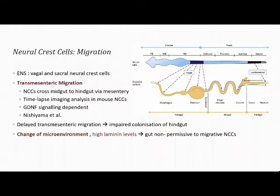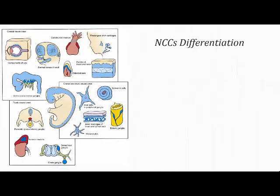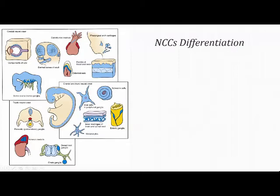Another theory involves changes in the microenvironment, where high laminin levels may make the gut non-permissive to migrating neural crest cells. Neural crest cells — cranial, vagal, or sacral — differentiate into a variety of tissues including components of the eye, cranial connective tissues, dermal bones of the skull, conotruncal structures, pharyngeal arch cartilages, odontoblasts, dermis of the head and neck, cranial nerve ganglia, peripheral glial cells, melanocytes, enteric ganglia, Schwann cells, pre- and paravertebral ganglia, adrenal medulla, and dorsal root ganglia neuroblasts.